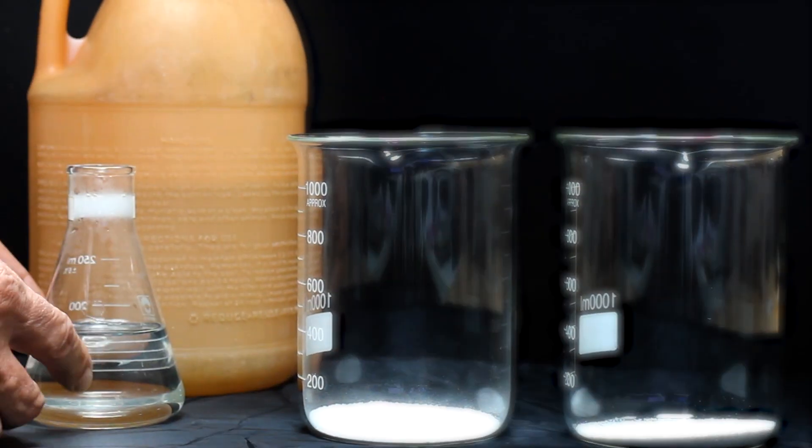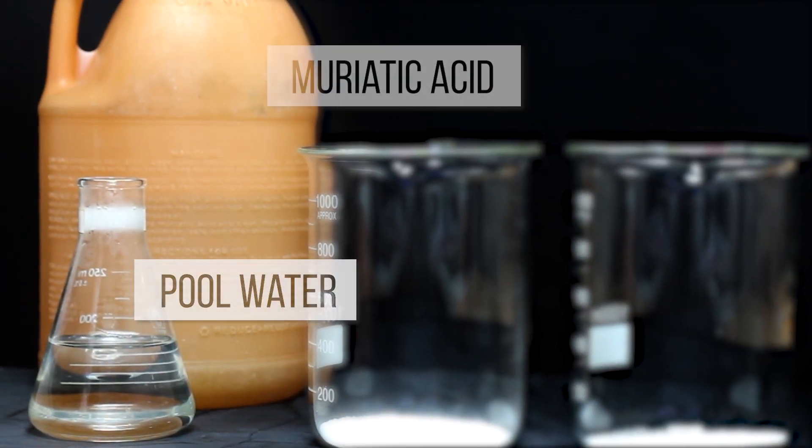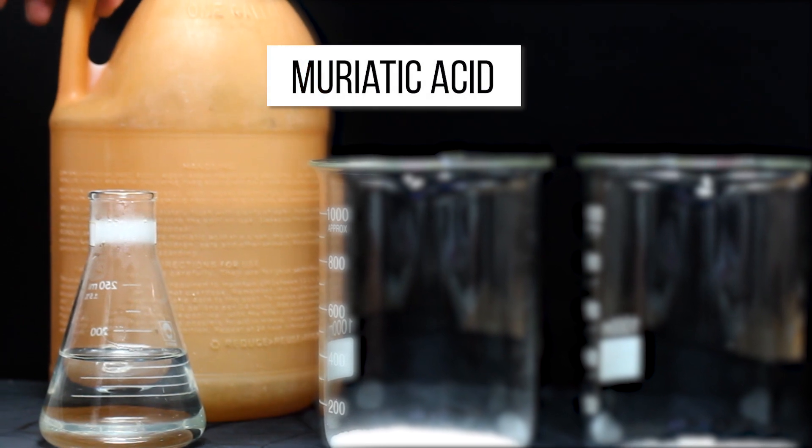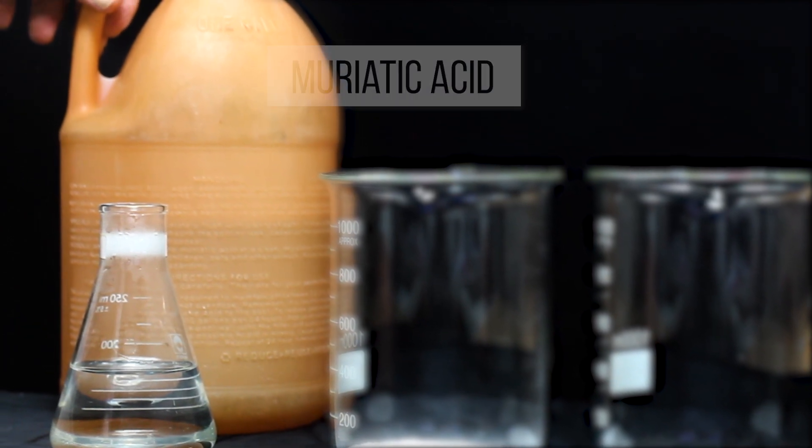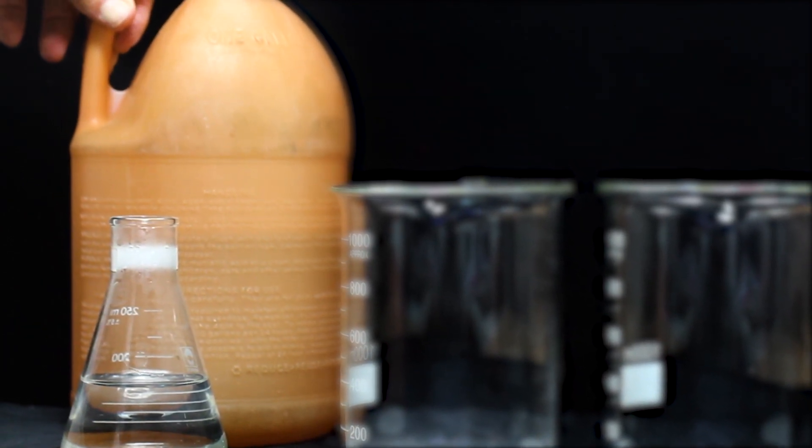Over here I have some regular pool water and some muriatic pool acid. Muriatic acid is the acid used in pools to balance the pH and enable the chlorine to work properly.